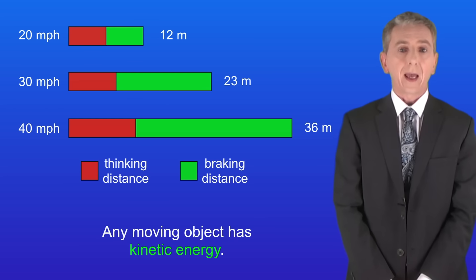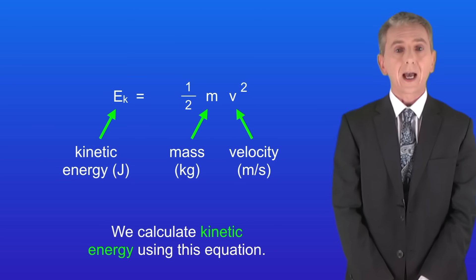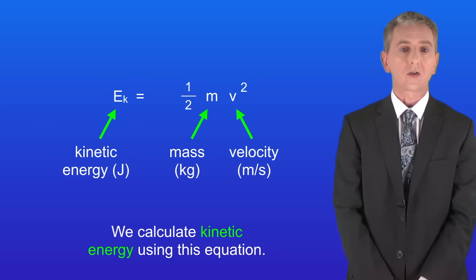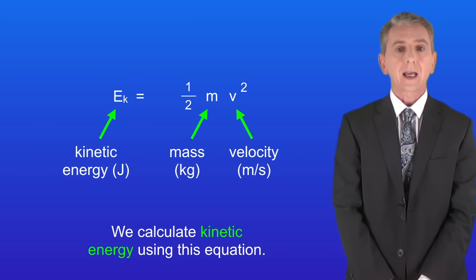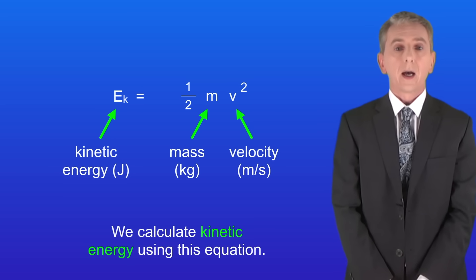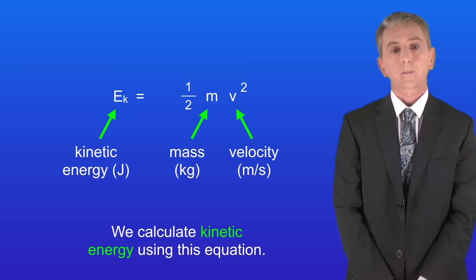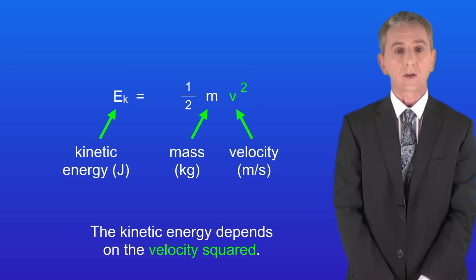Remember that any moving object has kinetic energy. We calculate kinetic energy using this equation, and we saw this equation in the topic on energy. The kinetic energy equals half multiplied by the mass multiplied by the velocity squared, and you're not given this in the exam so you do need to learn it. The key fact is that the kinetic energy depends on the velocity squared.